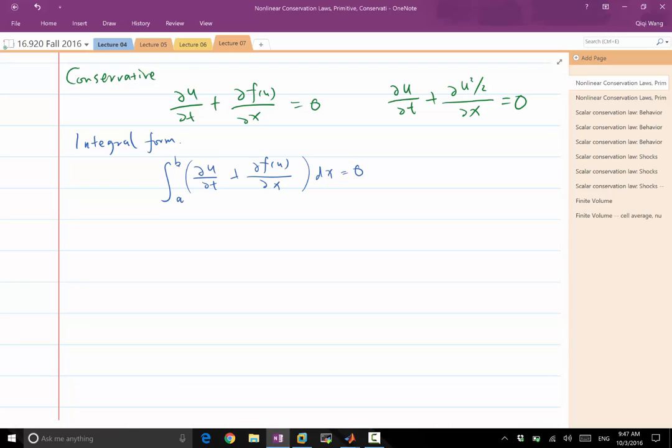So, with the fixed number integration, that integral commutes with time derivative. As long as a is not dependent on t, b is not dependent on t, then you can exchange the integral and the derivative and make the time derivative outside. So, the time derivative of the integral becomes the first term.